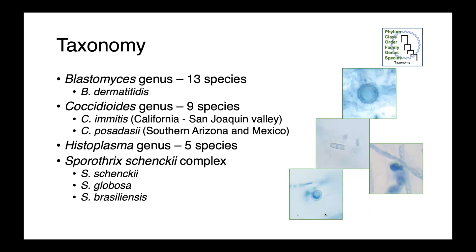Within the genus Blastomyces, there are 13 species, of which Dermatitidis is the most clinically relevant. Coccidioides is made up of nine species: Coccidioides imitis is found in California and the San Joaquin Valley, and Coccidioides posadasi is found in southern Arizona and Mexico — the disease caused by these two species is clinically indistinguishable. There are five species of Histoplasma, of which Histoplasma capsulatum is the most important, and Sporothrix has many species, with primary interest in the schenckii complex, including schenckii sensu stricto, globosa, and brasiliensis.